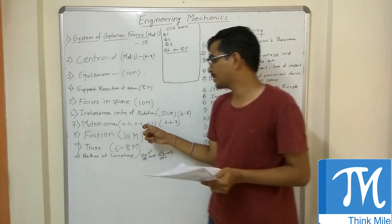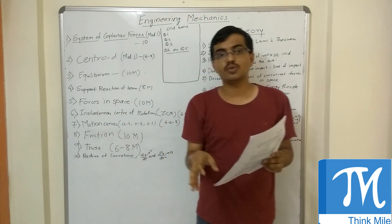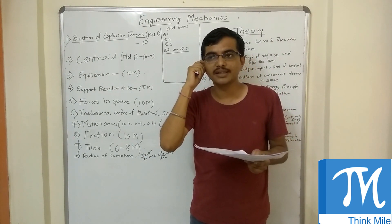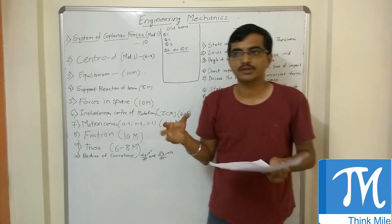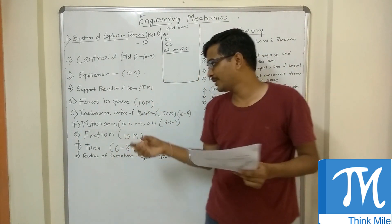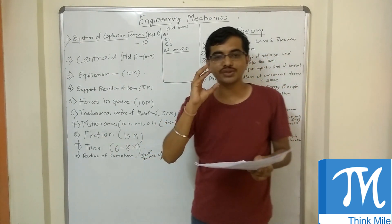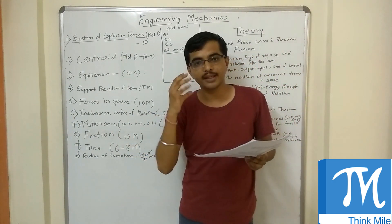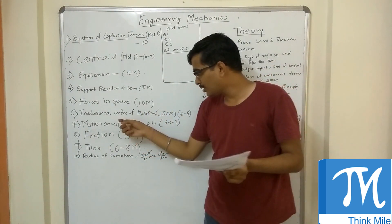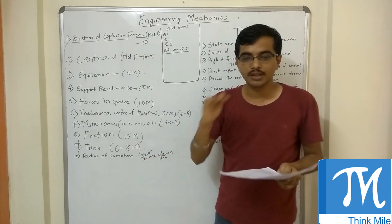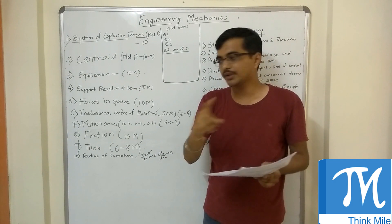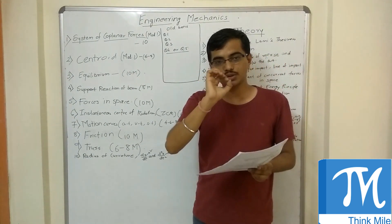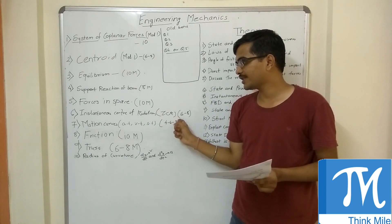There is one question on motion curves, which is normally seen in every paper. What can be given is a diagram — maybe in XT form — and you will be told to find the AT, VT, or ST curve. It is a very simple question. Just remember the equations for AT, VT, and ST, and then it is all about substitution. Initial conditions will be given to you and then you find the final conditions. I think one question will surely appear on this topic in the paper.